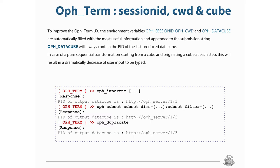For example, after OPH_import_nc with some arguments, if you want to subset the cube, you can use simply OPH_subset without specifying the input data cube. Then if you want to duplicate this data cube, you can use simply OPH_duplicate, again without specifying the input data cube.